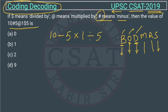So this will become: 10 minus 5 multiply 1 upon 5. 1 upon 5 is how much? This will be 1 upon 5, which is 0.2.